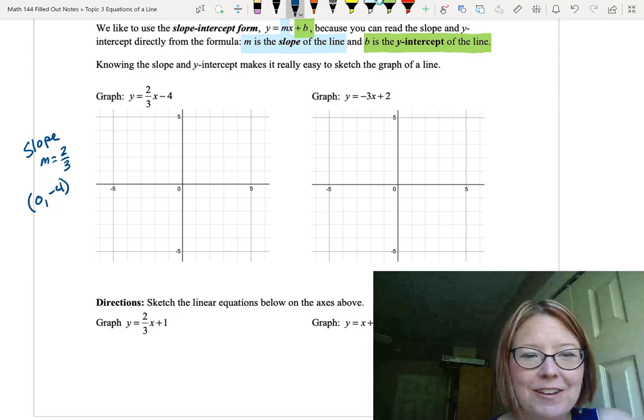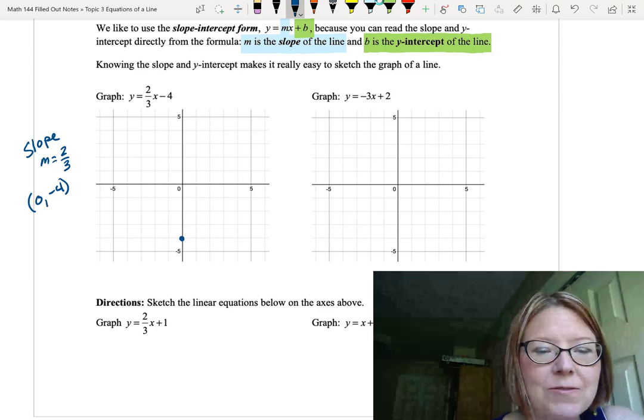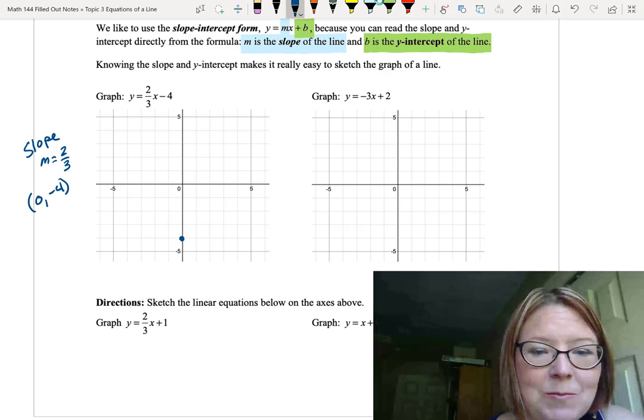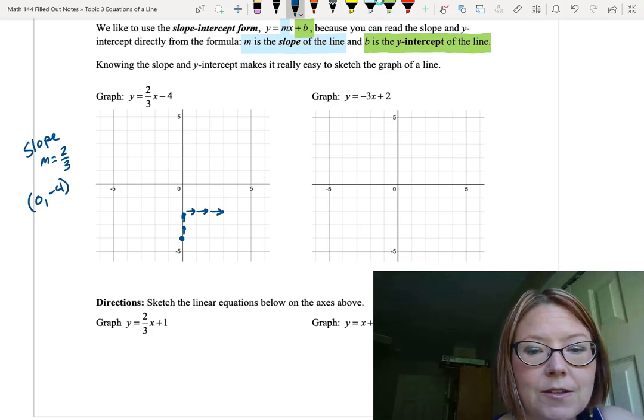When we're graphing a line from the slope and a point, we always start by graphing the point first. Let's go ahead and graph 0 negative 4, the y-intercept at negative 4. Then we'll use our slope triangle of 2 thirds, that's a rise of 2 and a run of 3. From this negative 4 y-intercept, we're going to rise 2 units, 1, 2, and run 3 units in the right-hand direction, giving us another point.